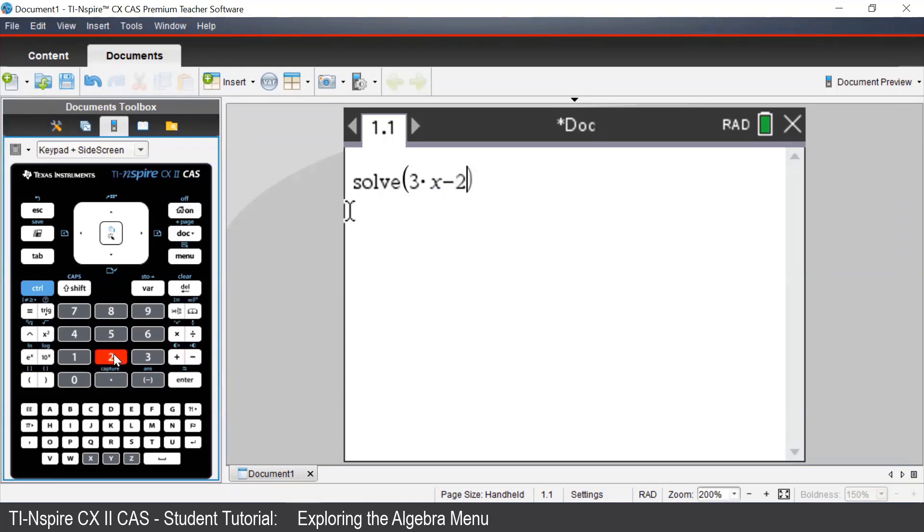To enter the equal sign, we press the equal sign button underneath the blue control button. Once we've typed in our equation, we need to put a comma, which is at the bottom left-hand side of our keypad, and then the pronumeral that we are solving for, in this case, x.